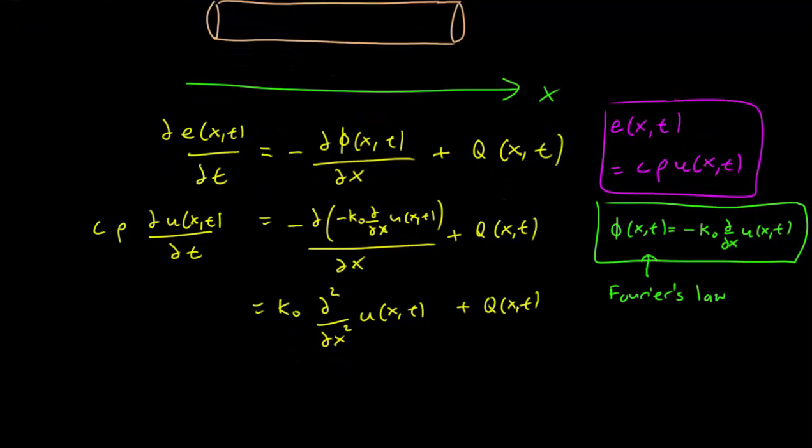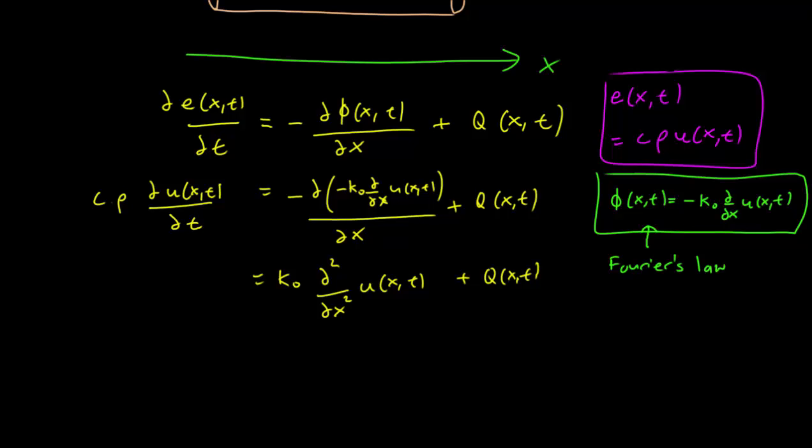Right, and this is now an equation that is purely in u. Well we have the Q there but we can now just rearrange the constants to get partial u with respect to t equals k_0 divided by c rho times the second derivative with respect to x plus Q(x,t) over c rho.